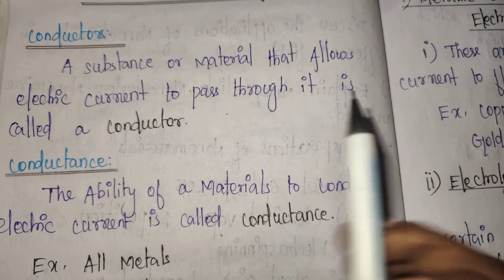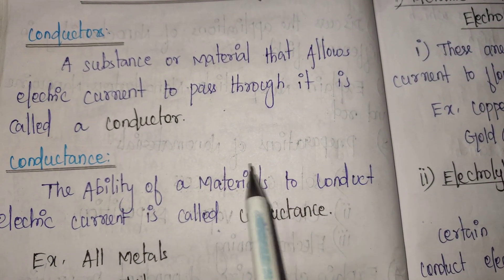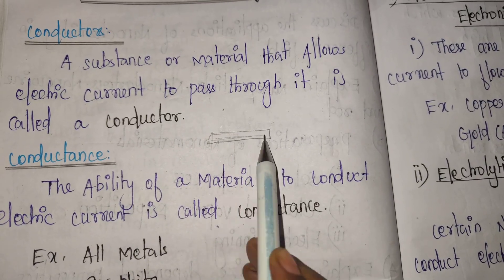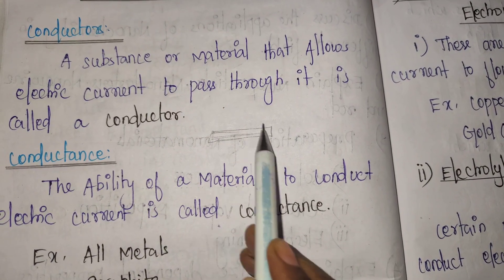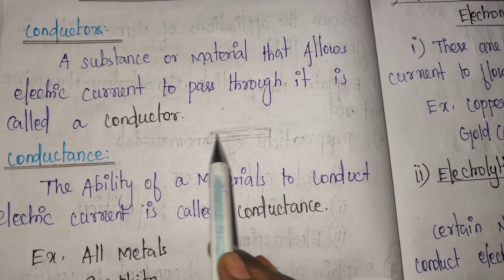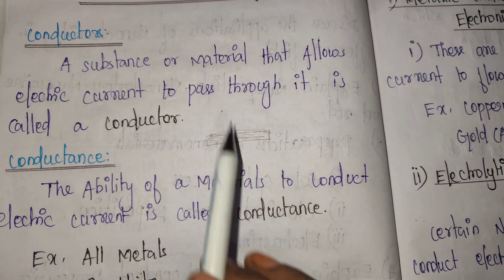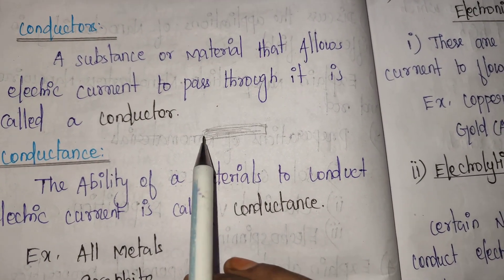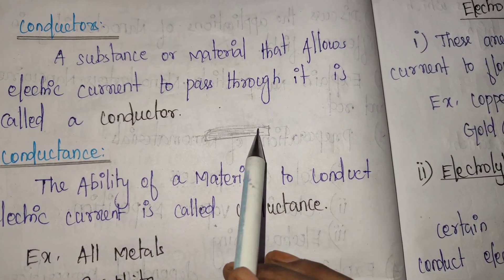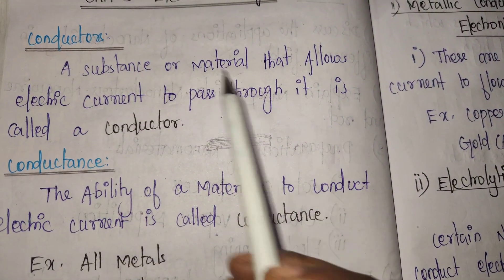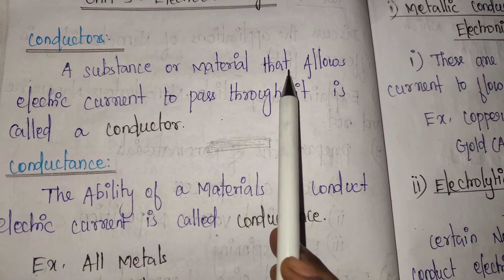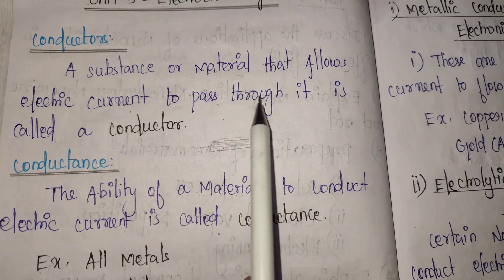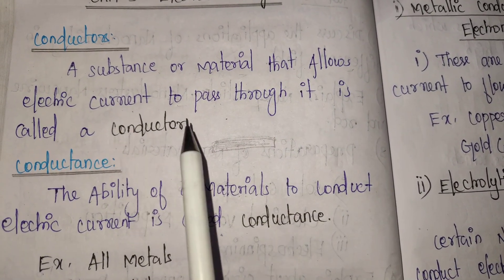The substance or material that allows electric current to pass through it is called a conductor.